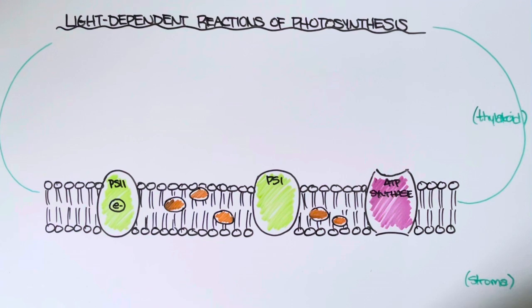And ultimately the goal of the light dependent reactions isn't to make glucose, it's to make two molecules which will eventually enter the stroma and then they will go on to fuel the next set of reactions. So eventually we're going to be making a molecule called ATP and another molecule called NADPH.